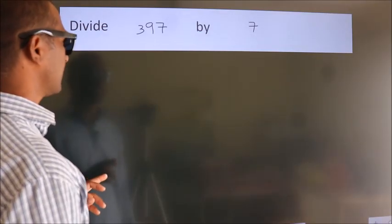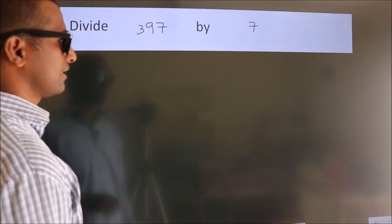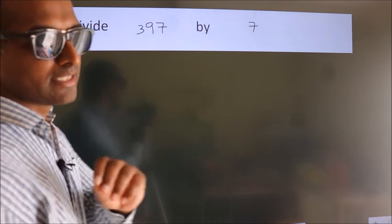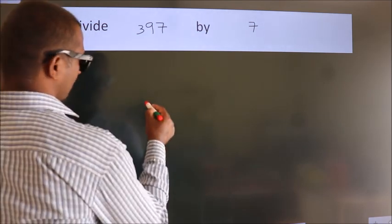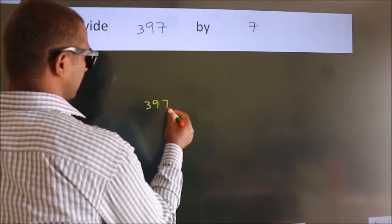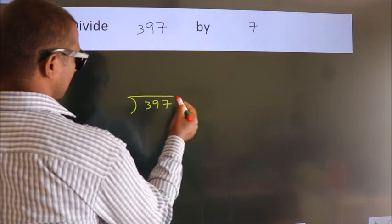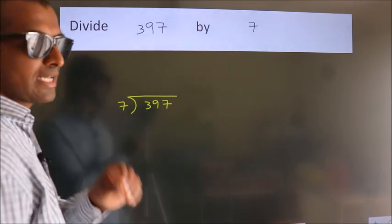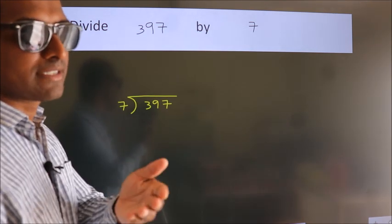Divide 397 by 7. To do this division, we should frame it in this way: 397 here, 7 here. This is step 1. Next.